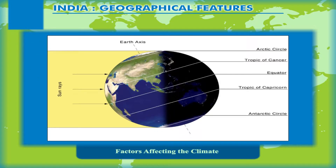The Tropic of Cancer, which divides the country into almost two equal halves, marks the boundary between the two climatic zones.